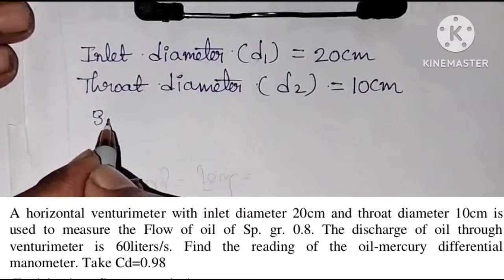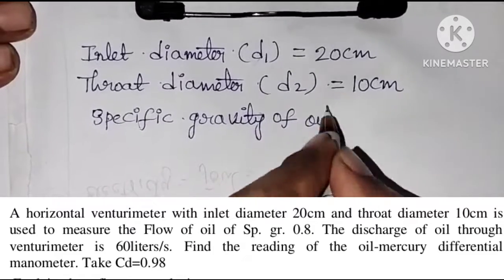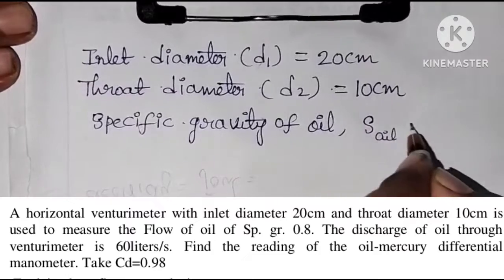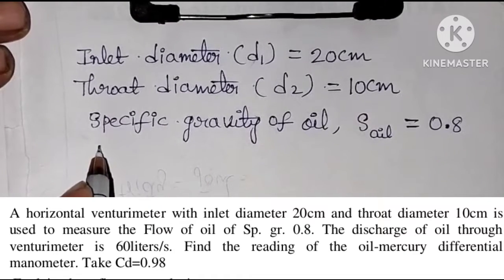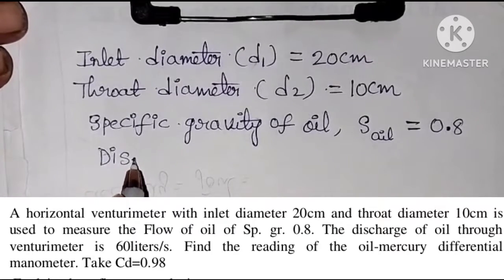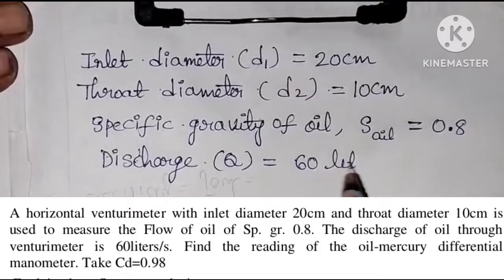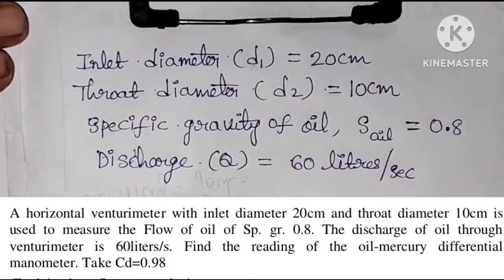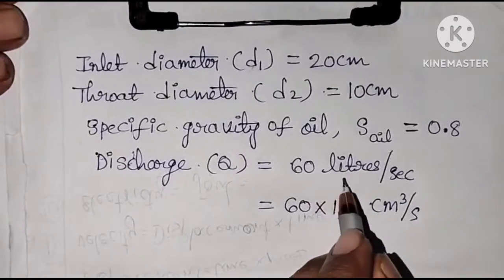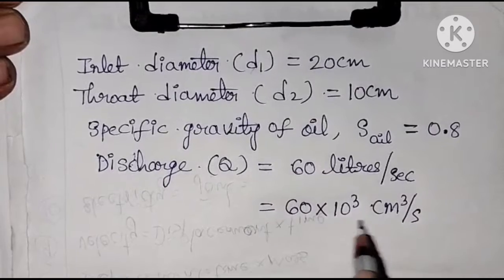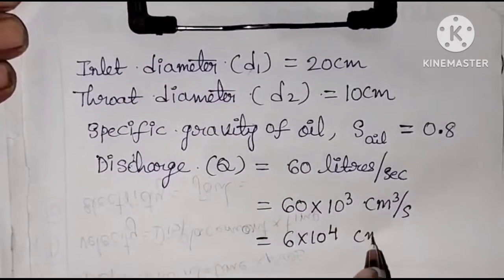Specific gravity of oil, S_oil, is equal to 0.8. And the discharge of oil through the venturimeter is 60 liters per second. So discharge Q is equal to 60 liters per second. 60 liters means 60 into 10³ cubic centimeters per second, which can be written as 6 into 10⁴ cubic centimeters per second.